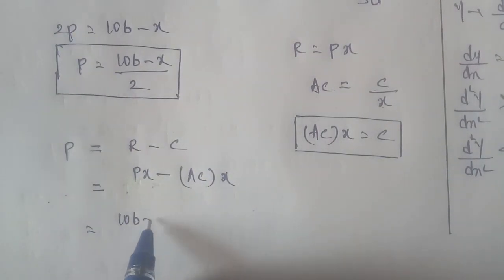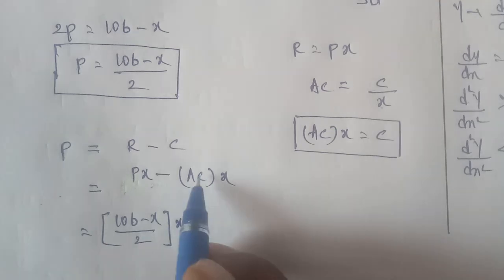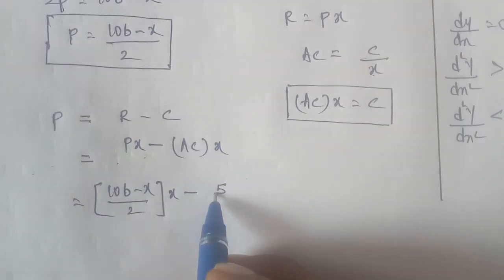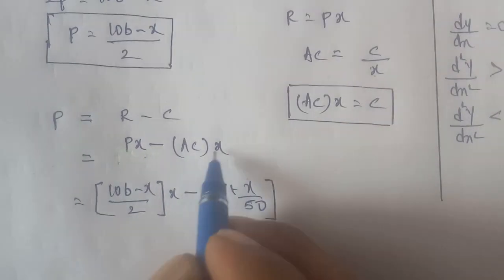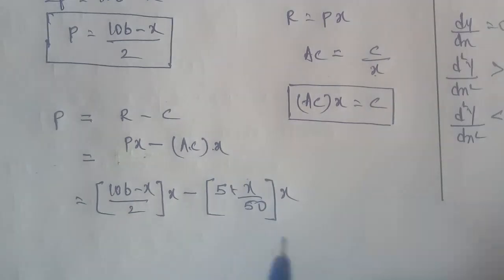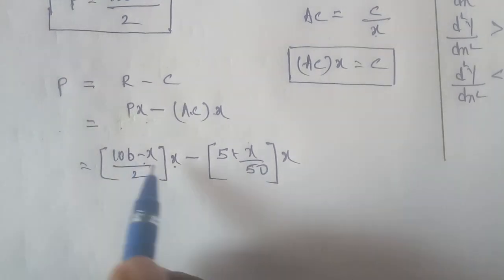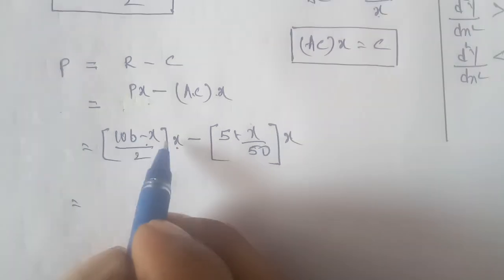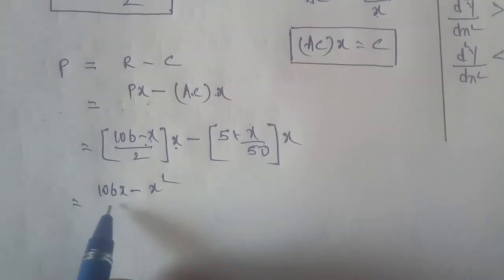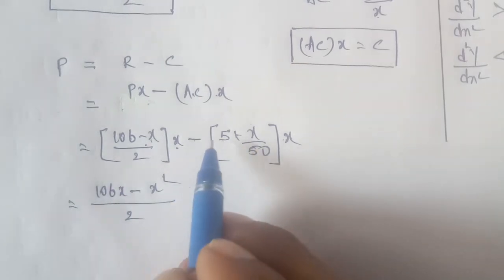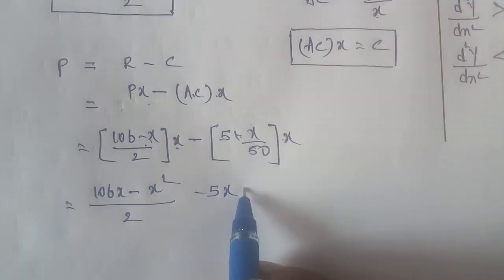Total revenue R equals px, so R equals x times (106 minus x) divided by 2, giving 106x by 2 minus x squared by 2. Total cost C equals AC times x, so C equals (5 plus x by 50) times x, giving 5x plus x squared by 50.